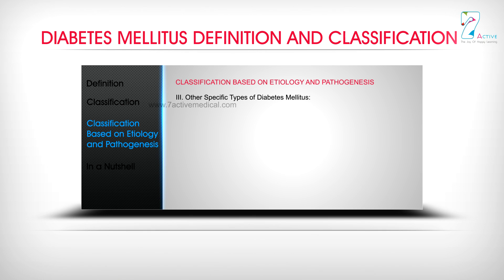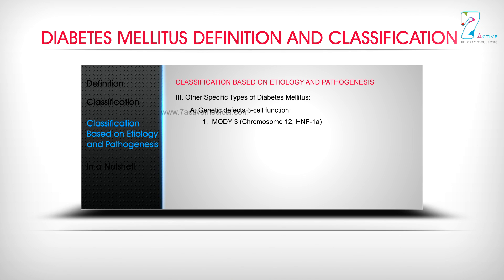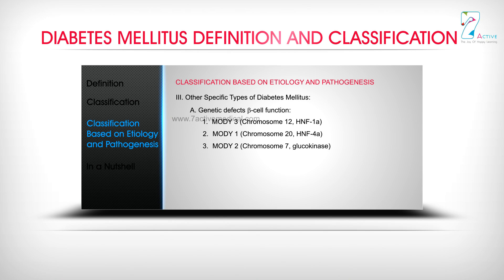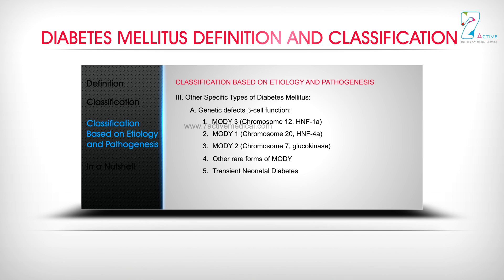Other specific types of diabetes mellitus. A. Genetic defects in beta cell function: 1. MODY 3 — Chromosome 12, HNF1-alpha; 2. MODY 1 — Chromosome 20, HNF-4-alpha; 3. MODY 2 — Chromosome 7, Glucokinase; 4. Other rare forms of MODY; 5. Transient neonatal diabetes; 6. Permanent neonatal diabetes; 7. Mitochondrial DNA.